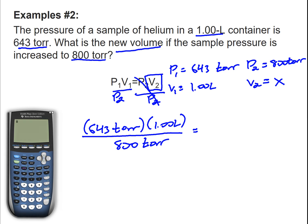Now I'm going to plug this in my calculator, so 643 times 1.00 divided by 800, and we get an answer of 0.80 liters.